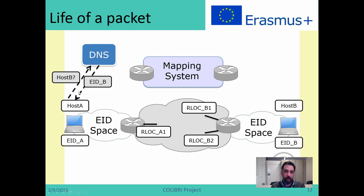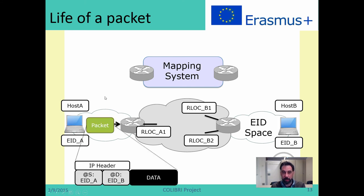As it happens today on the internet, host A will ask the DNS to tell it which is the IP address of host B. The DNS will reply with an IP address which in this case we interpret as an EID — EID B. Then host A will forward the packet as it happens today. You don't require any change on the host — hosts remain as we have today. So host A will forward a standard IP packet with source address EID A, destination address EID B, plus the application data content.